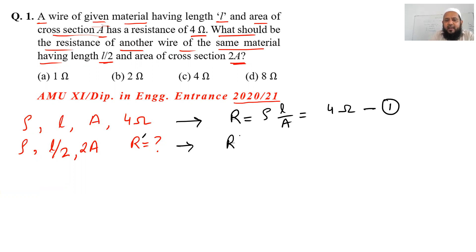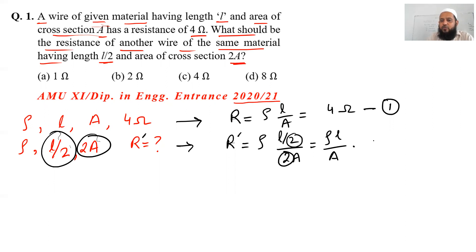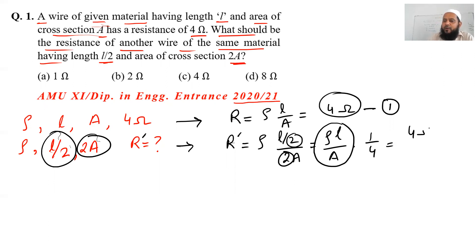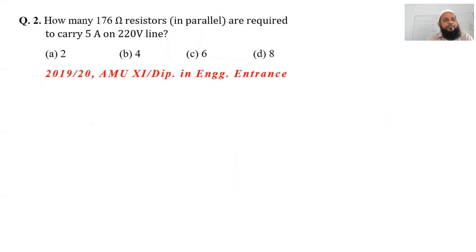Now for the second wire: R' = ρ × (L/2) / (2A). The length has been halved and the area has been doubled. Simplifying: R' = ρL/(4A) = (1/4) × (ρL/A) = (1/4) × 4 = 1 ohm. So this is the answer.